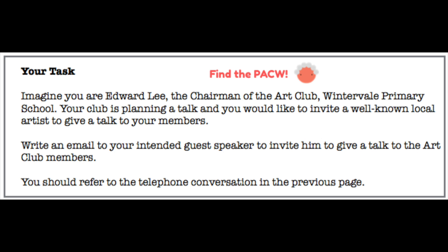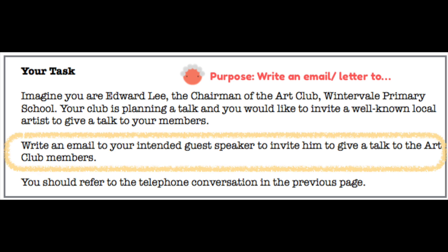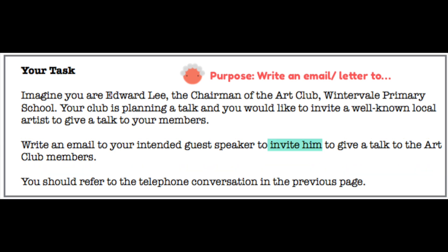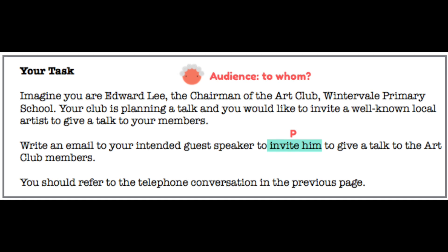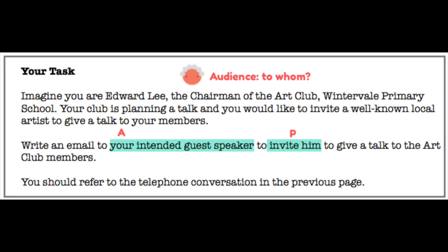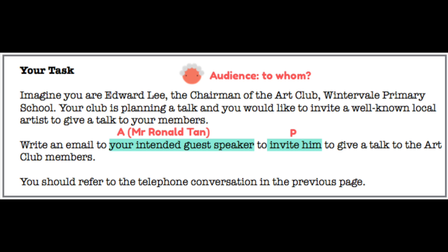For P, the Purpose, always look out for a sentence like 'write an email to somebody' or 'write a letter to somebody,' as that is where your purpose will usually be found. Here you can see: 'Write an email to your intended guest speaker to invite him to give a talk to the art club members.' The purpose is to invite him — highlight that and label it P. Next, the Audience: who are you writing to? You can see 'your intended guest speaker' — label it A. In this situation, the name is not given in the task box, but you can find it in the stimulus. Make sure you go back and find the name accurately; you can highlight it or add it as a note in your task box.